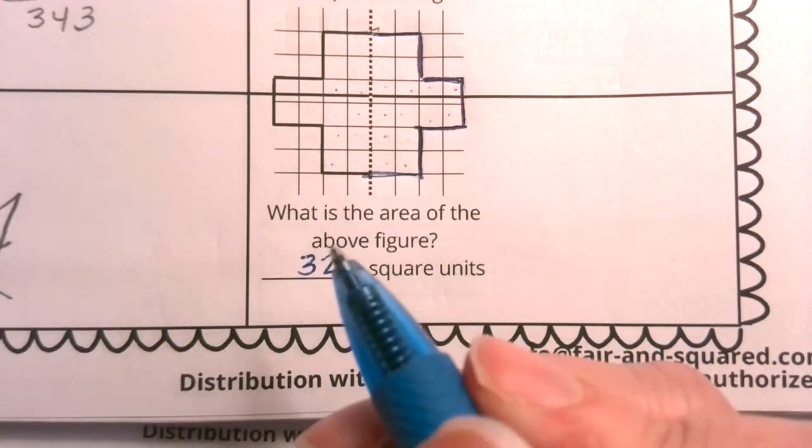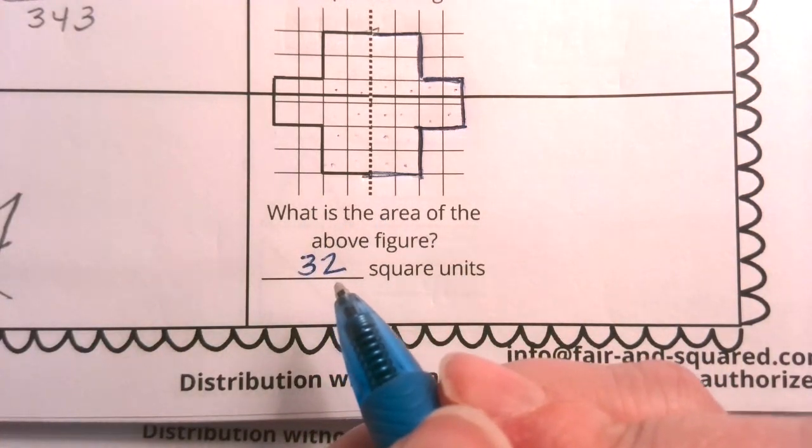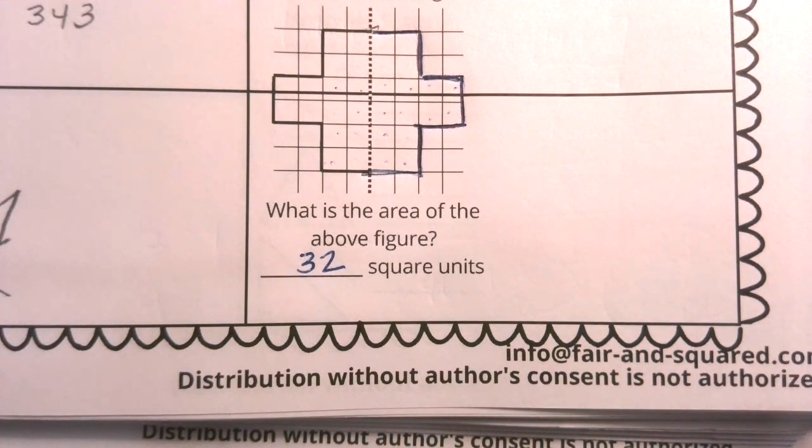So how many individual squares are inside of this shape? Well, there are 32. And we make sure we always record area in square units. But that was already written for us. So we have now finished our Tuesday.